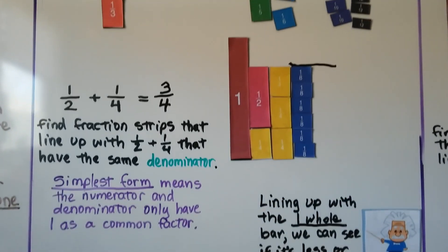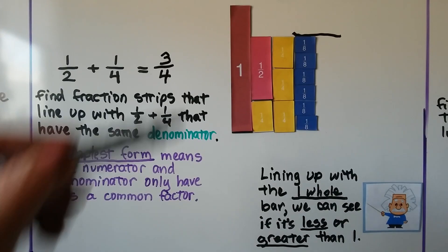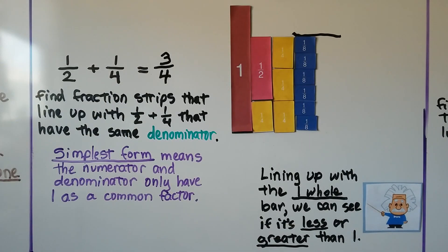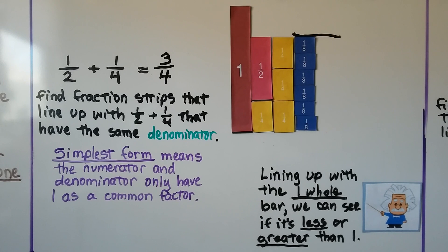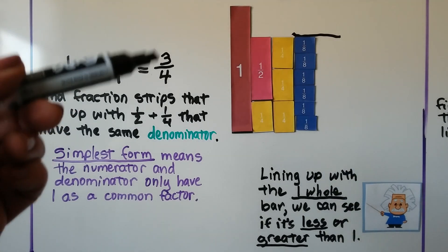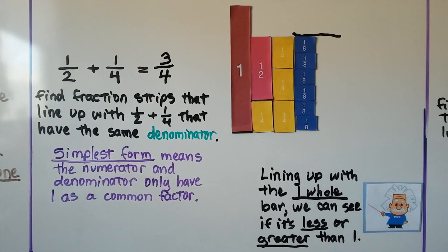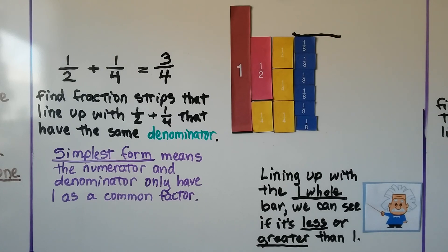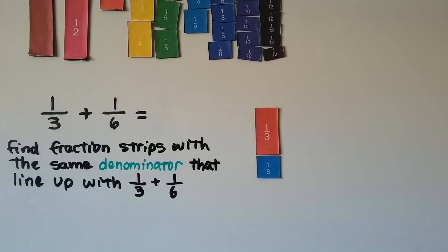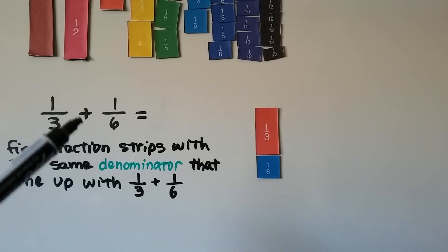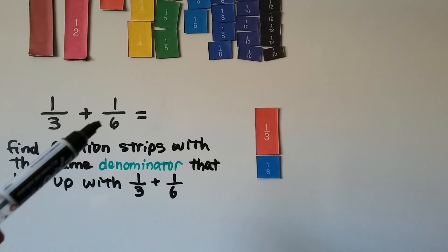Lining it up with that one-whole bar helped us see that the sum was going to be less than one. We can see that it's less than one. For this next problem, we need to add one-third plus one-sixth.